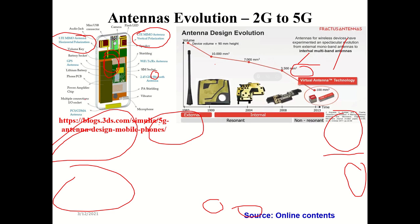Pattern diversity can also be ensured through polarization diversity — one antenna operating in vertical polarization and another in horizontal polarization. This ensures isolation between elements. As frequency increases toward millimeter wave, antenna physical sizes shrink from centimeter to millimeter scale.